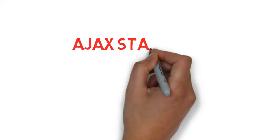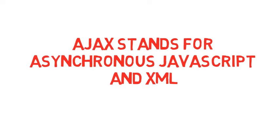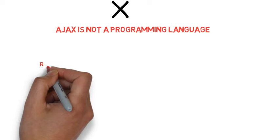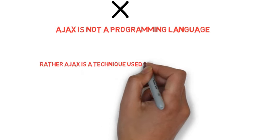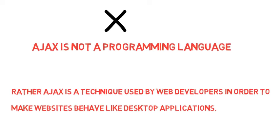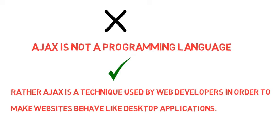Ajax stands for Asynchronous JavaScript and XML. It is a technique by which we request data from a remote server without reloading the entire page. It is not a programming language — there is a misconception around the world about that. It is a technique used by web developers to make websites behave like desktop applications.